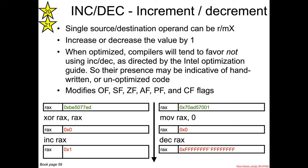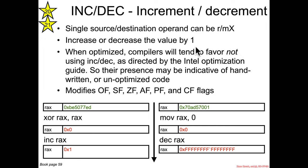The inc and dec instructions are pretty trivial — it's just increment plus one and decrement minus one. These instructions both take a single source/destination operand, which can be specified in RMX form, and they increment or decrement by one.